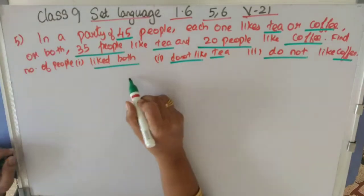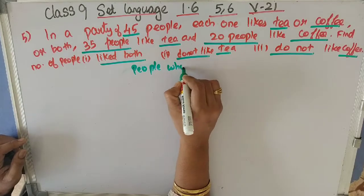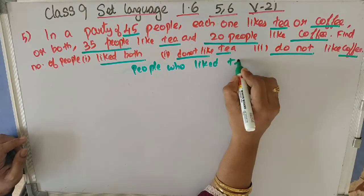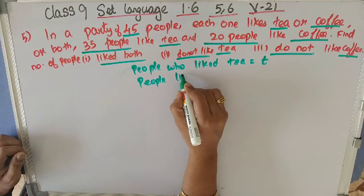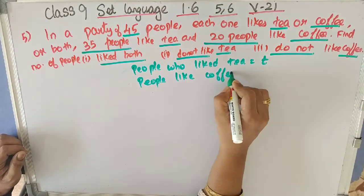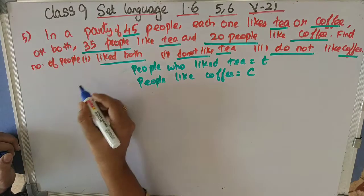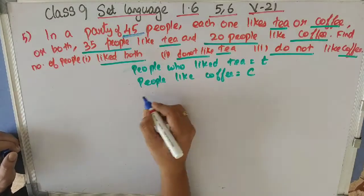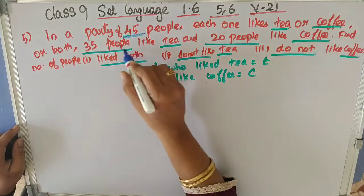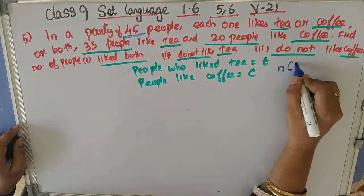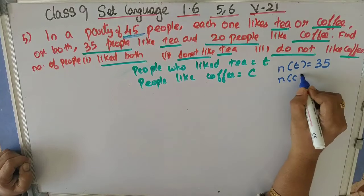First, let's say the people who like tea are denoted as T, and people who like coffee are denoted as C. We know 35 people like tea, so N of T is equal to 35. 20 people like coffee, so N of C is equal to 20.